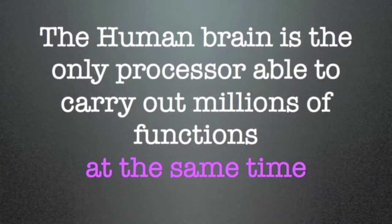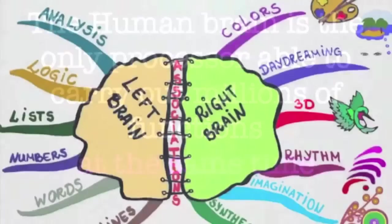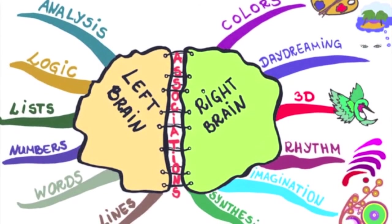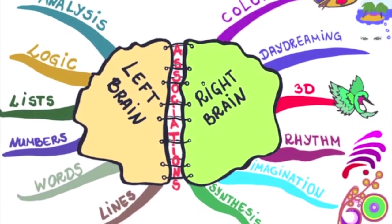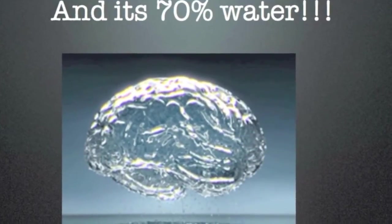And the human brain is alone as a processor in being able to carry out millions of functions simultaneously. Broadly speaking, the brain is divided into left and right functions, and miraculously, it's 70% water.